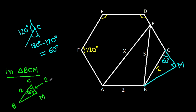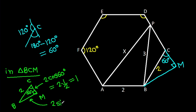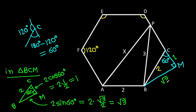So CM will be 2 cos 60 degrees, that will be 2 times 1 over 2, and it is 1. And BM will be 2 sin 60 degrees, that will be 2 times root 3 over 2, and it is root 3. So CM is 1 and BM is root 3.